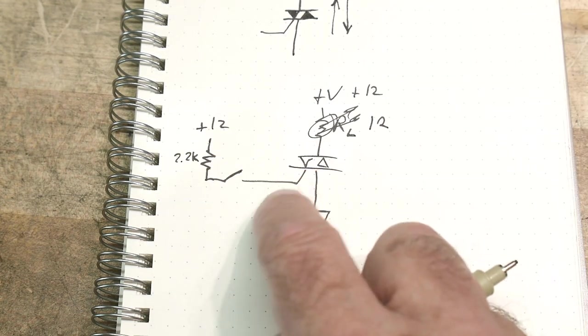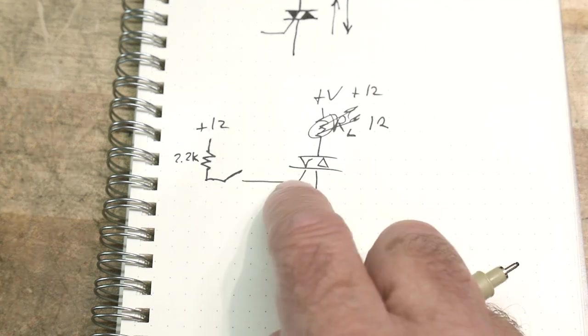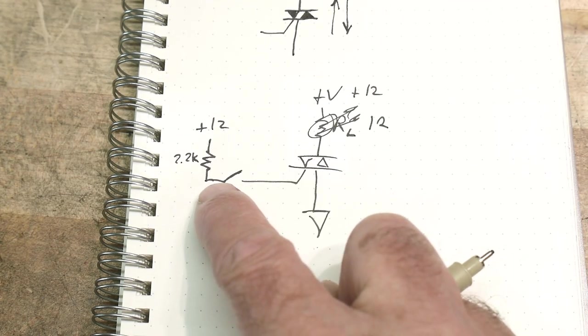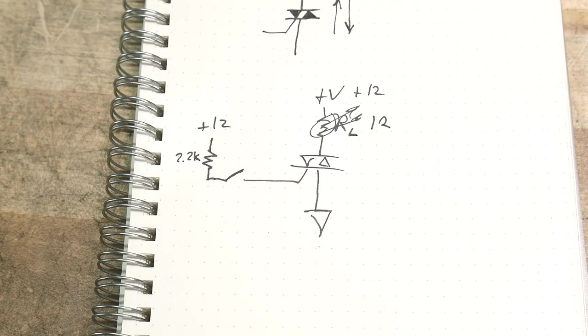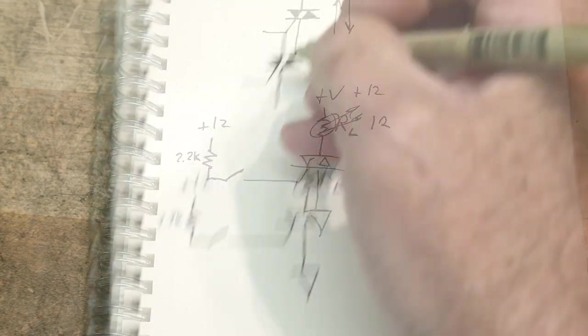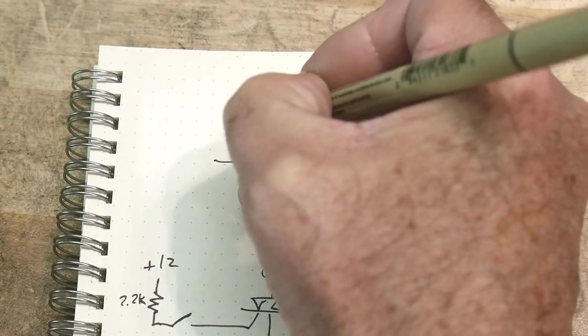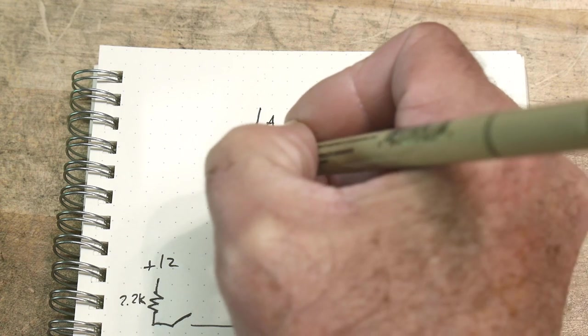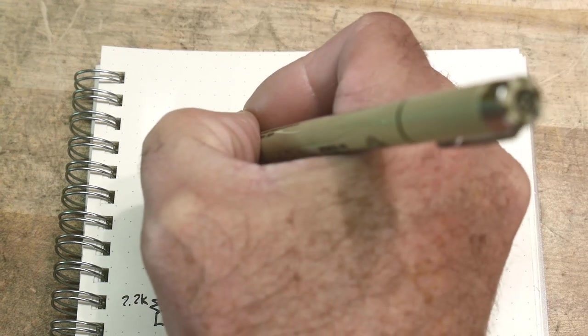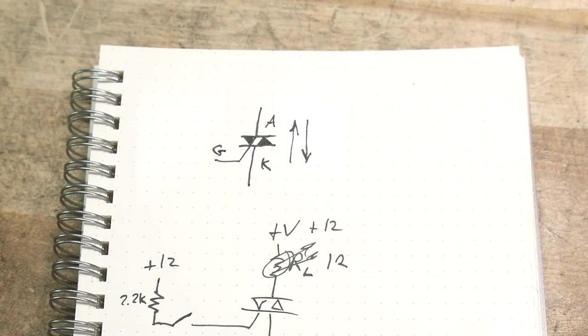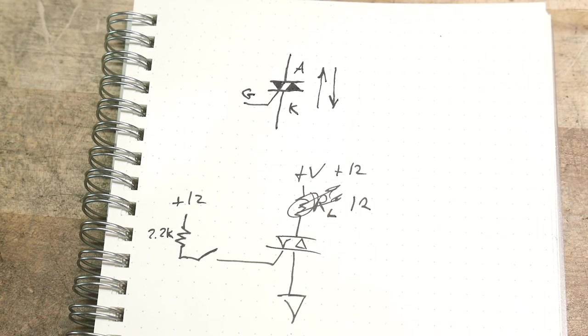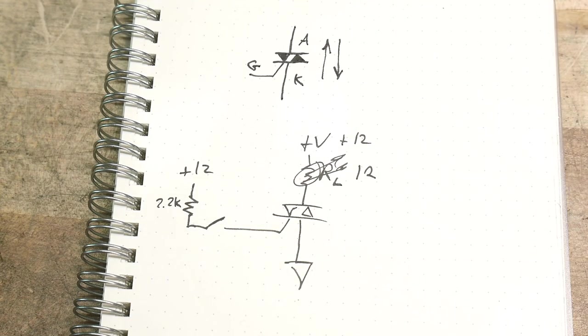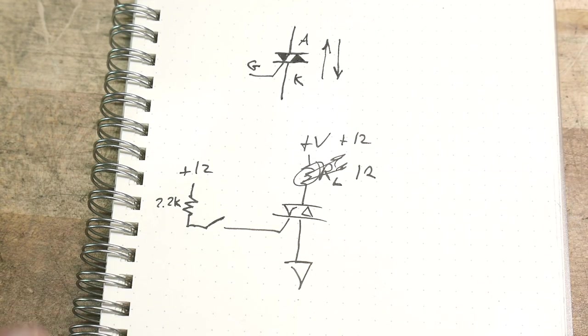So when we pulled this line here high, it turned it on. And then if we remove this, it still stayed on. So these are normally labeled anode, cathode, and gate. Kind of strange K with K for cathode there. So they're kind of a strange device in DC land. In AC land, they're a little bit different. Okay.